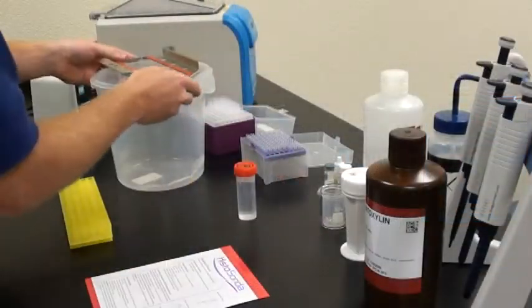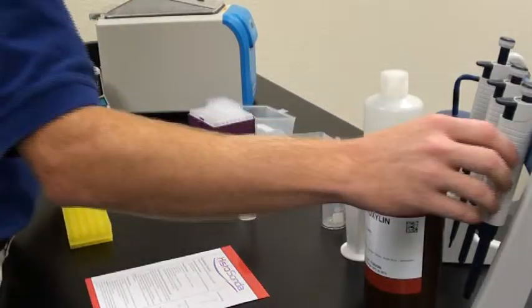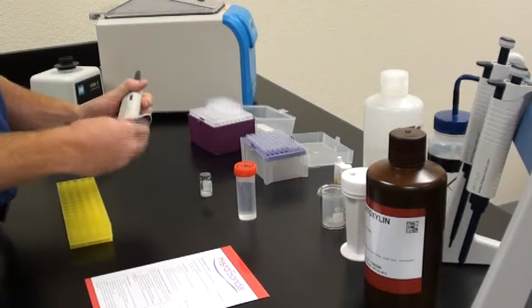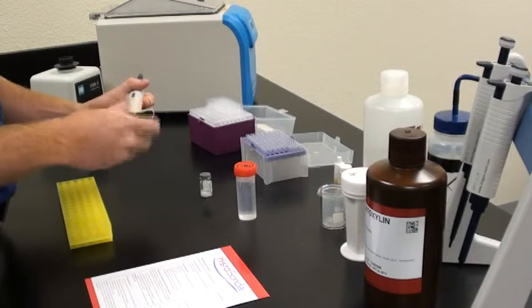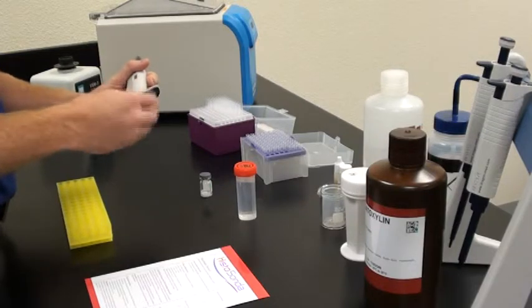While we're waiting, we can go ahead and reconstitute our primary antibody, anti-digoxin. To do that, we're going to pipette 1 ml or 1,000 microliters of steam distilled water into the anti-dig container, vortex and agitate.